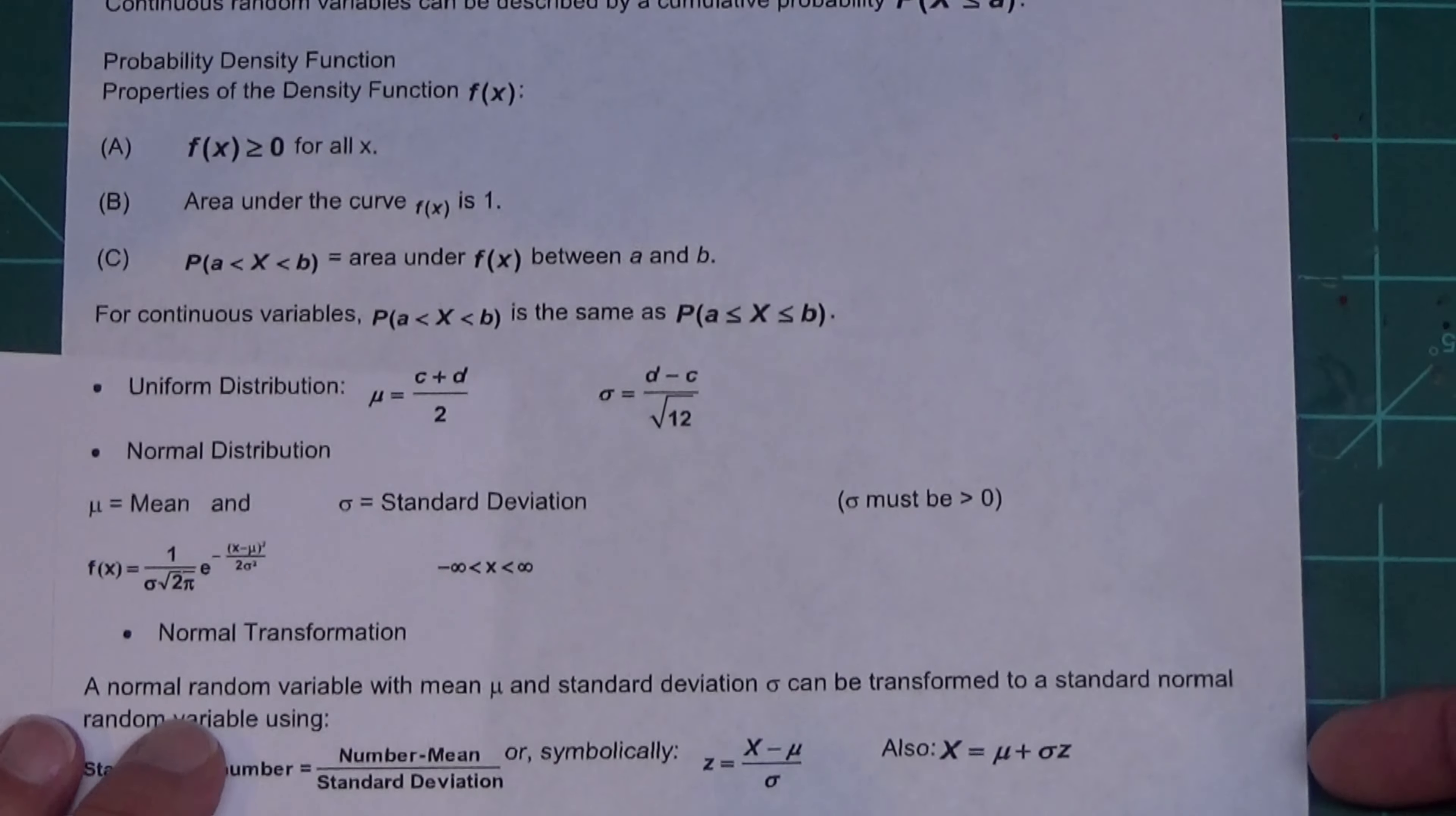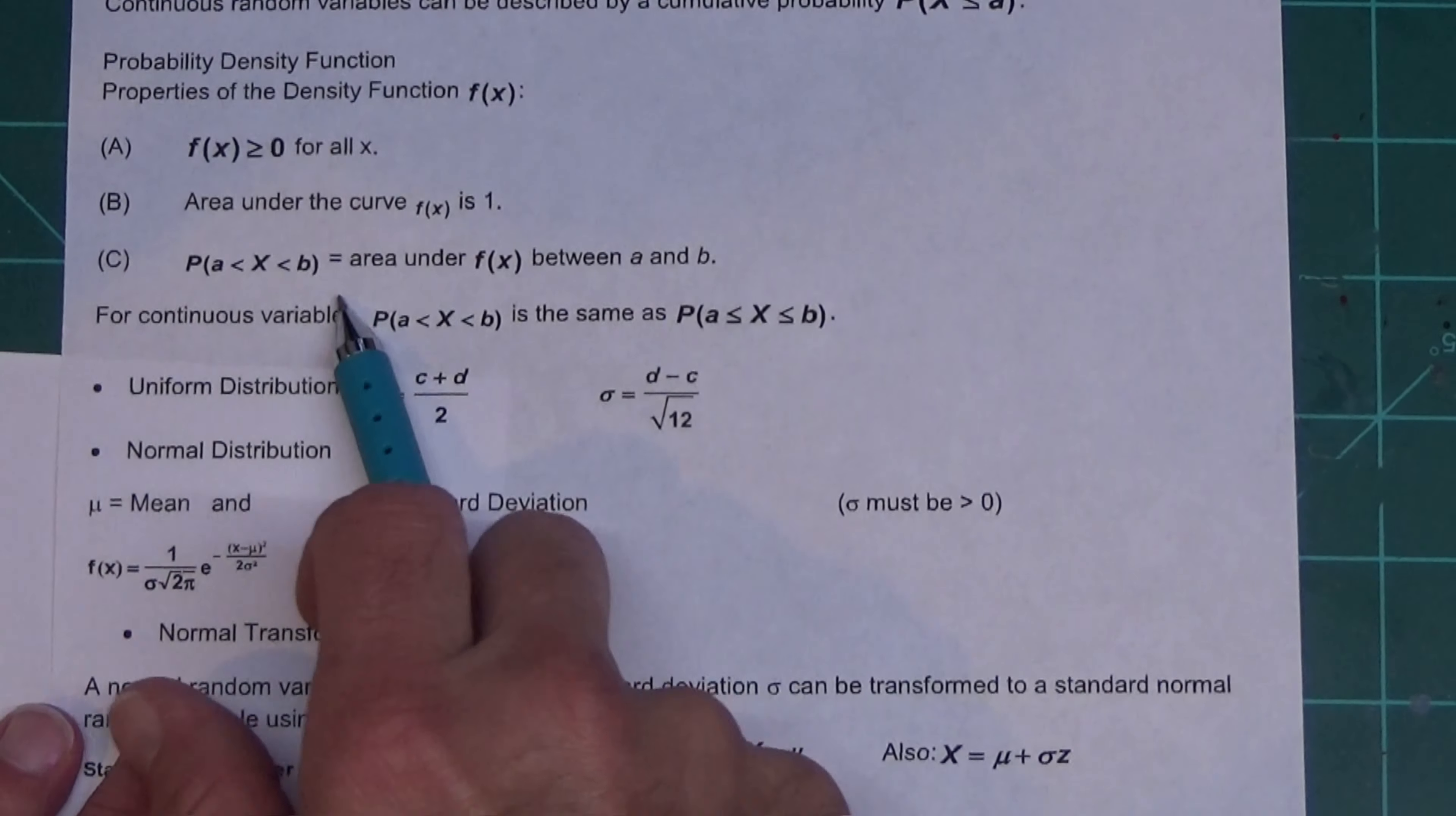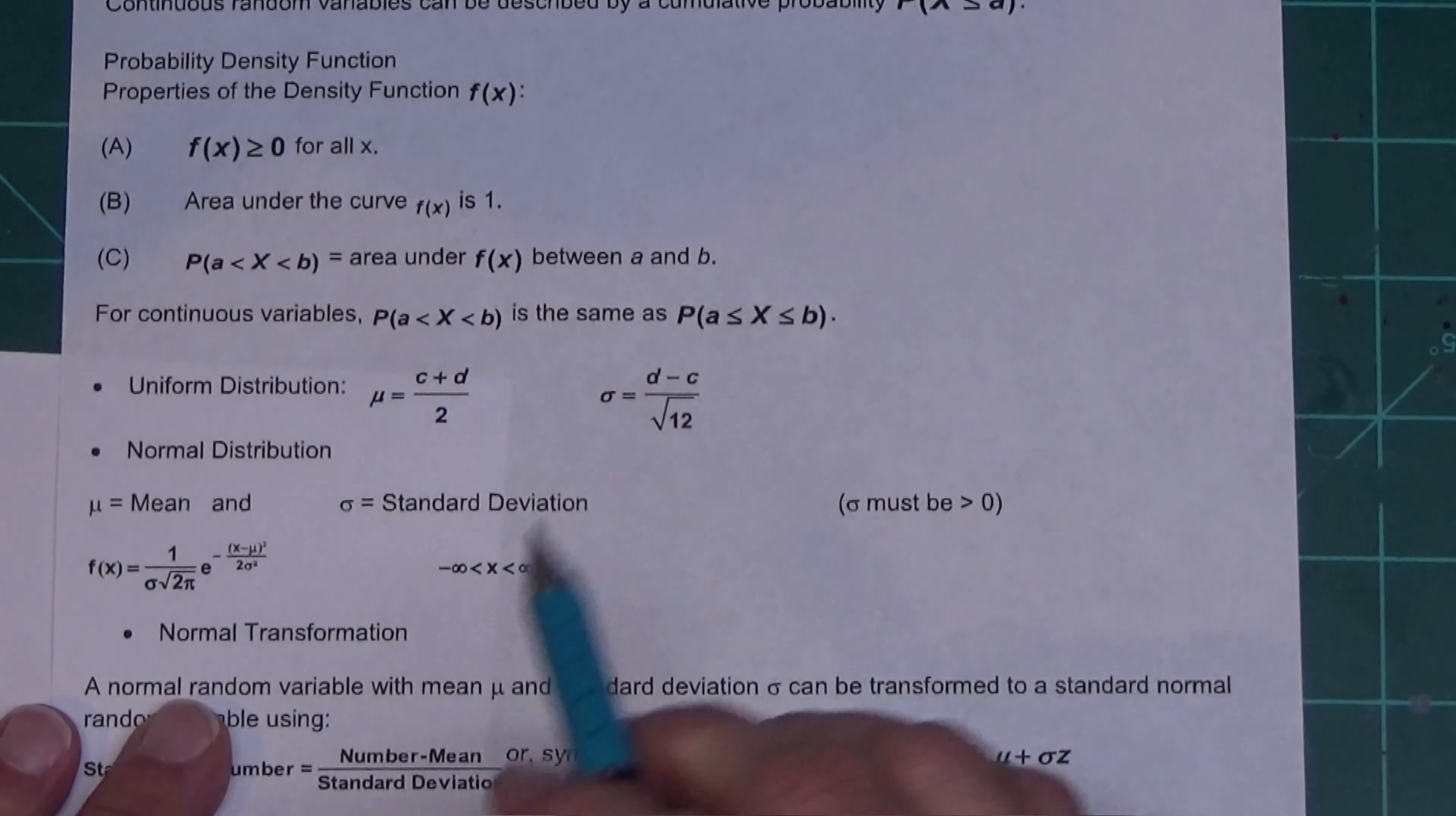Properties: the probability density function f(x) is greater than or equal to zero—in other words, it can never be negative, and the normal distribution bypasses that, which is fun. Anyhow, the area under the curve is one, and you would define probabilities using areas. That's what that says.